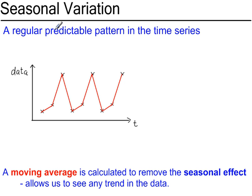Seasonal variation is a regular predictable pattern in the time series. For example, you would expect supermarket sales to be higher on Saturday and Sunday compared to the rest of the week. You would expect your electricity and gas bills to be higher during the winter season than summer. This is what you call seasonal variation - something that you can predict will be quite regular in your data.